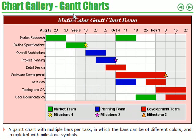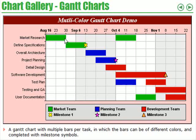What does the Gantt chart do? It enables you to see the work of various teams and projects laid out horizontally, giving the subject, the amount of time, and which project is taking how much time. So, a Gantt chart with multiple bars per task, in which the bars can be of a different colour and completed with milestone symbols.